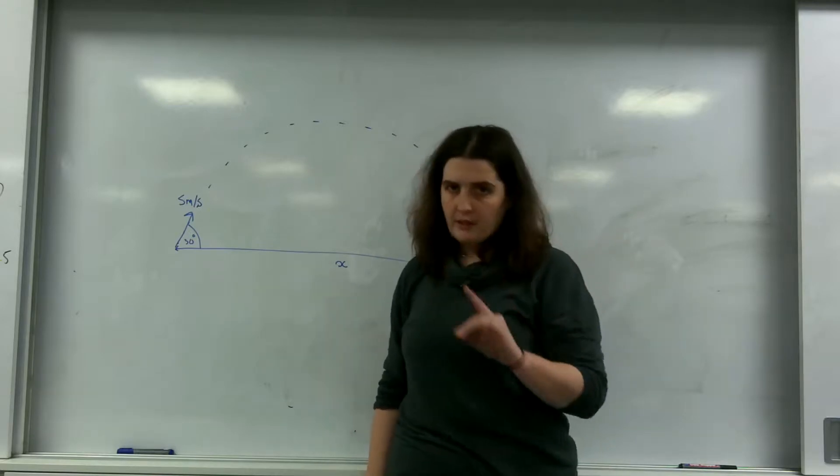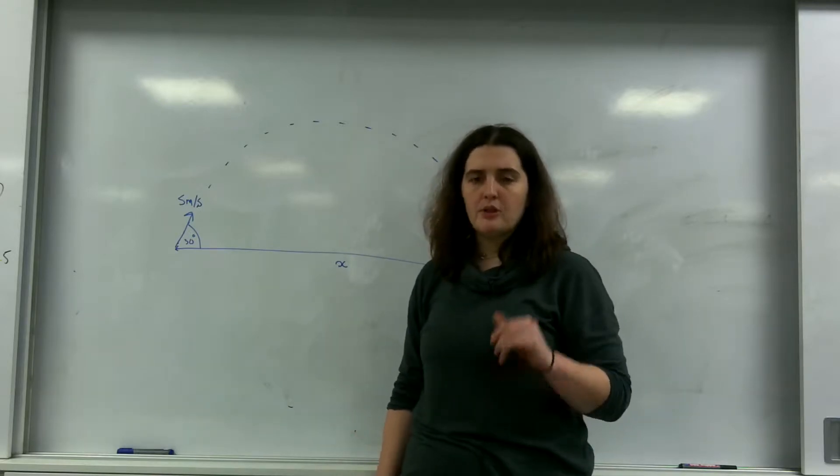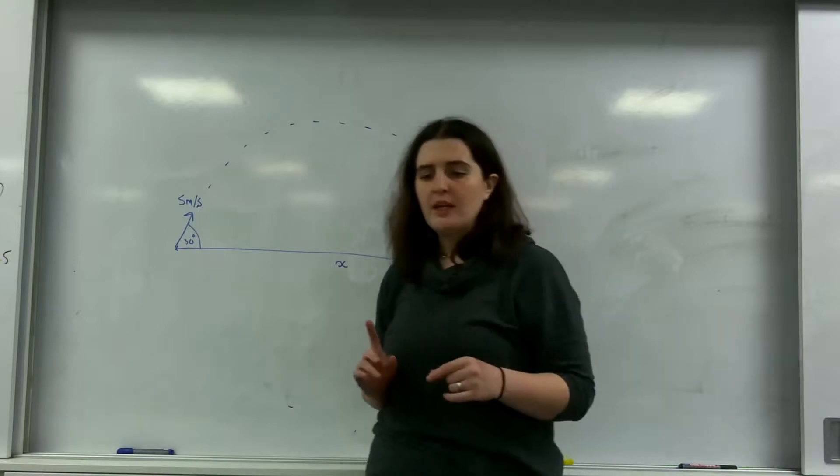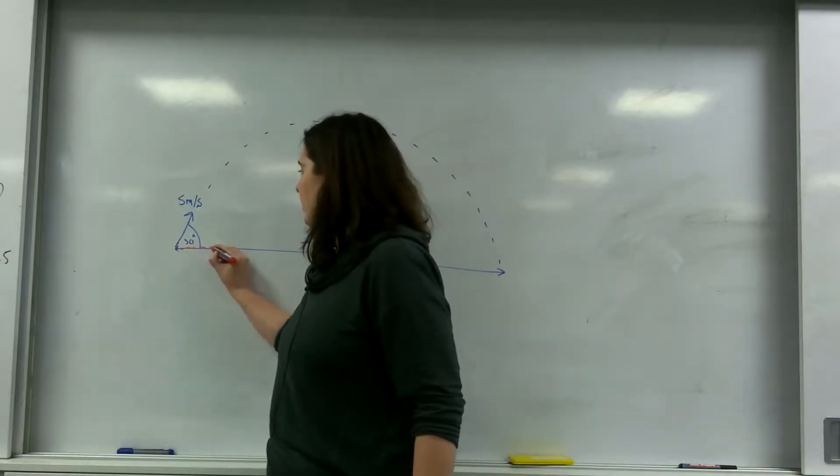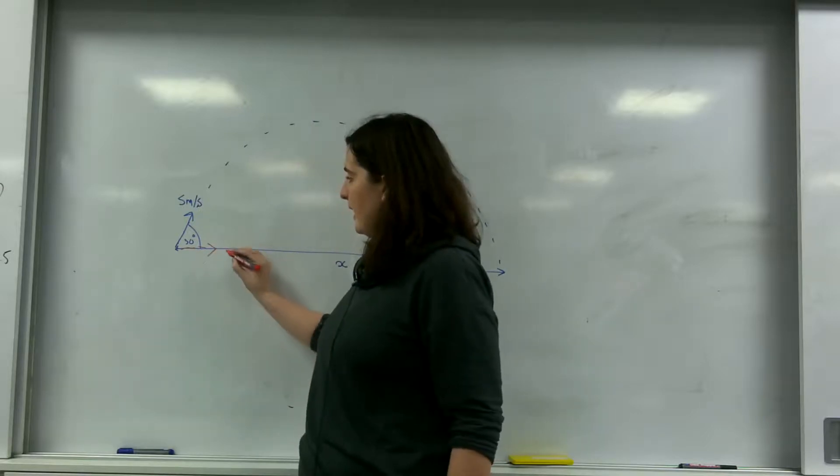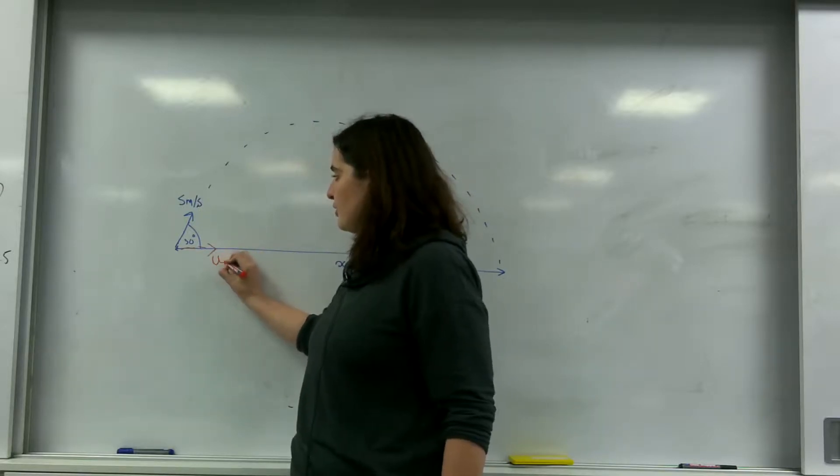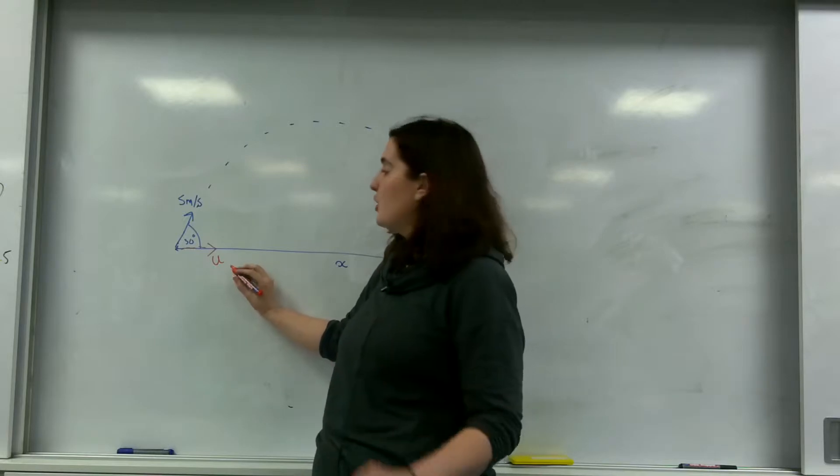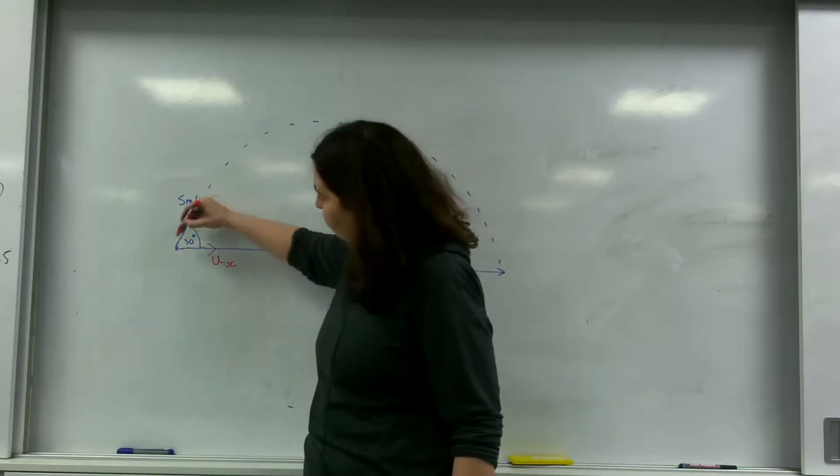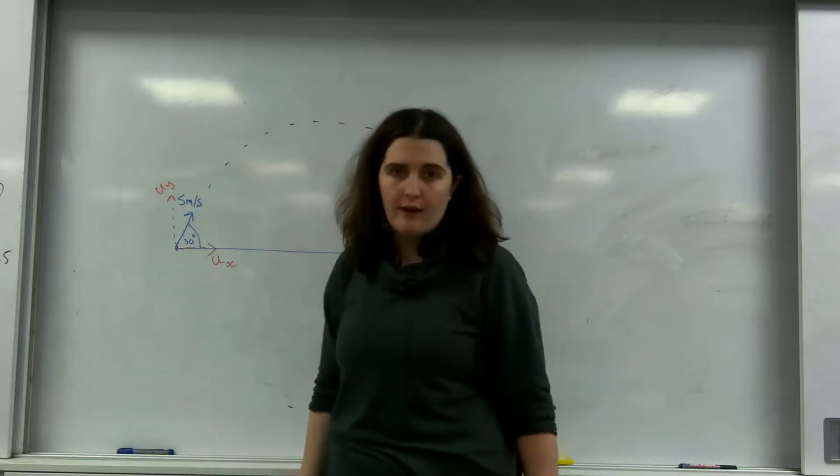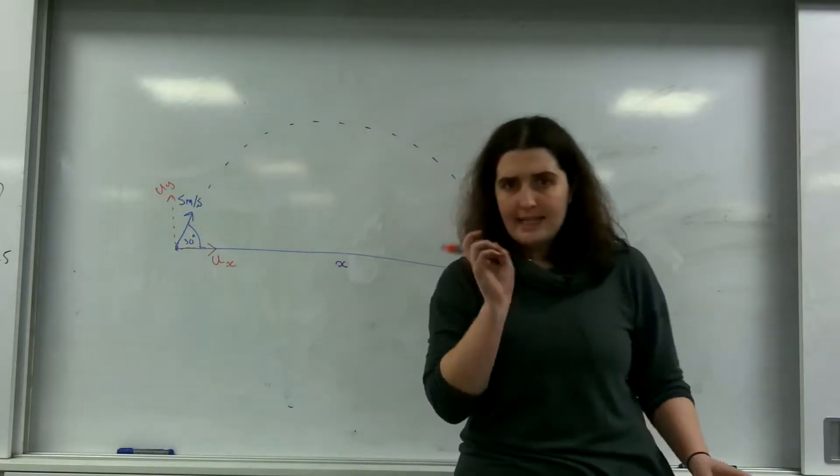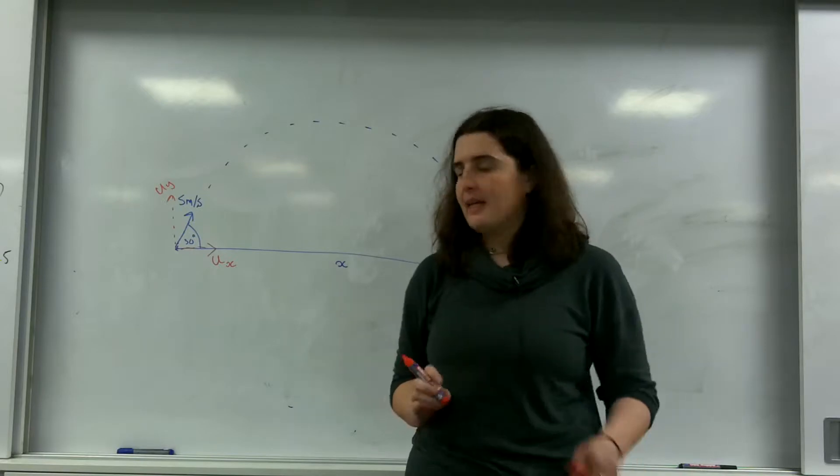And with most things we do like taking components, the first thing you should do is instantly draw in some component lines. So this here would be the velocity or the initial velocity, which is the letter u, in the x direction. And this would be the initial velocity in the y direction. And that is really key and important that that is labeled.